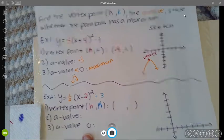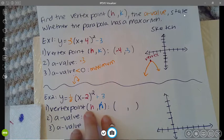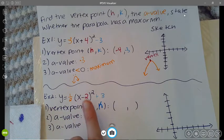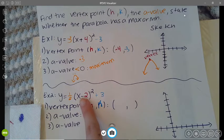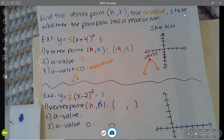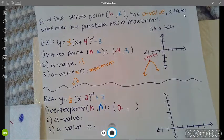Okay, but anyways, this is the H and the K. The H is whatever's added or subtracted to the X, but you have to flip the sign. So if it's minus 2 in here, it's actually going to be a positive 2 here.